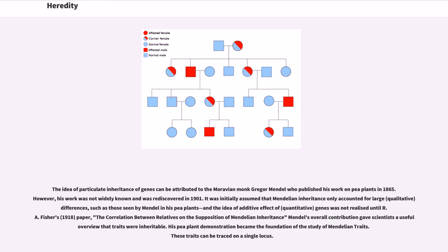The idea of additive effect of quantitative genes was not realized until R.E. Fisher's 1918 paper, The Correlation Between Relatives and the Supposition of Mendelian Inheritance. Mendel's overall contribution gave scientists a useful overview that traits were inheritable. His pea plant demonstration became the foundation of the study of Mendelian traits. These traits can be traced on a single locus.